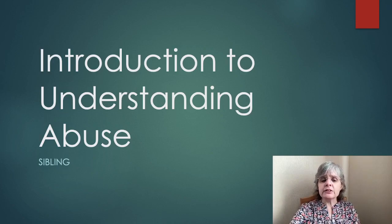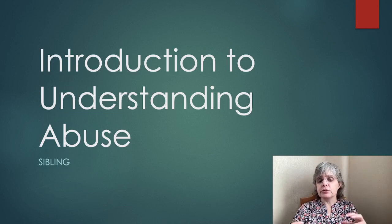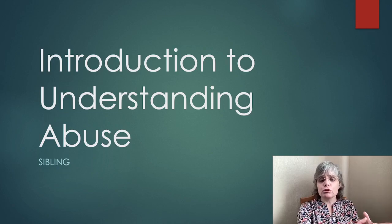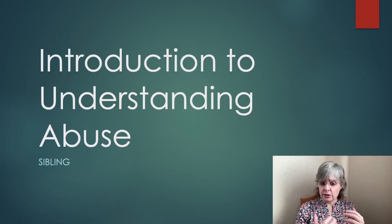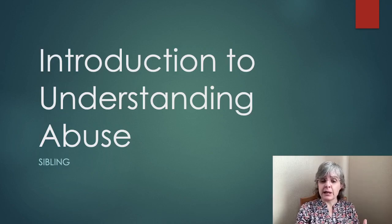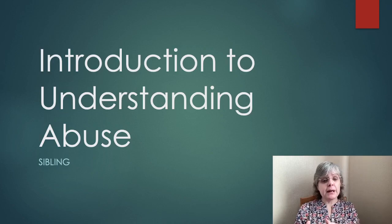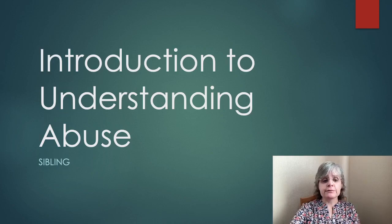Being dependent on the abuser — remember, abuse is about control. The abuser controls the victim, and the victim becomes dependent on the abuser in their emotions, thoughts, and behavior. So the sibling becomes dependent on the abuser as they go through life.